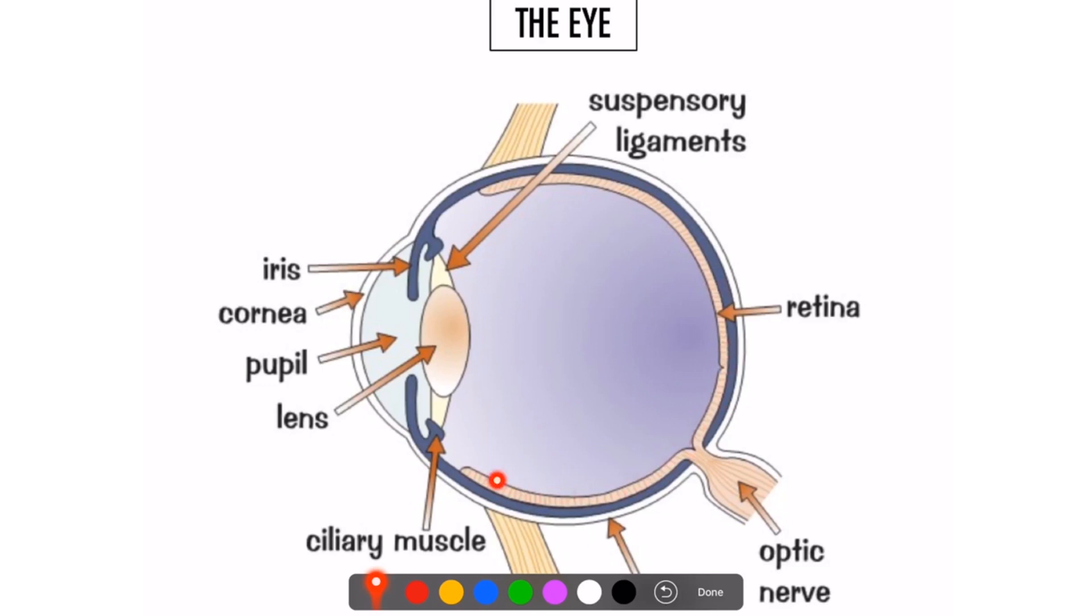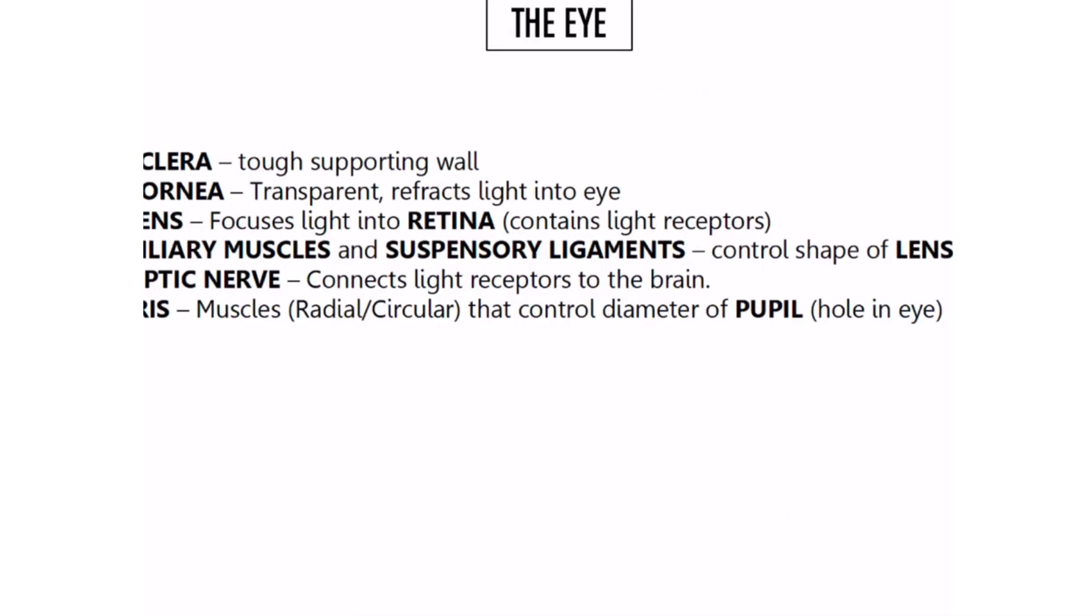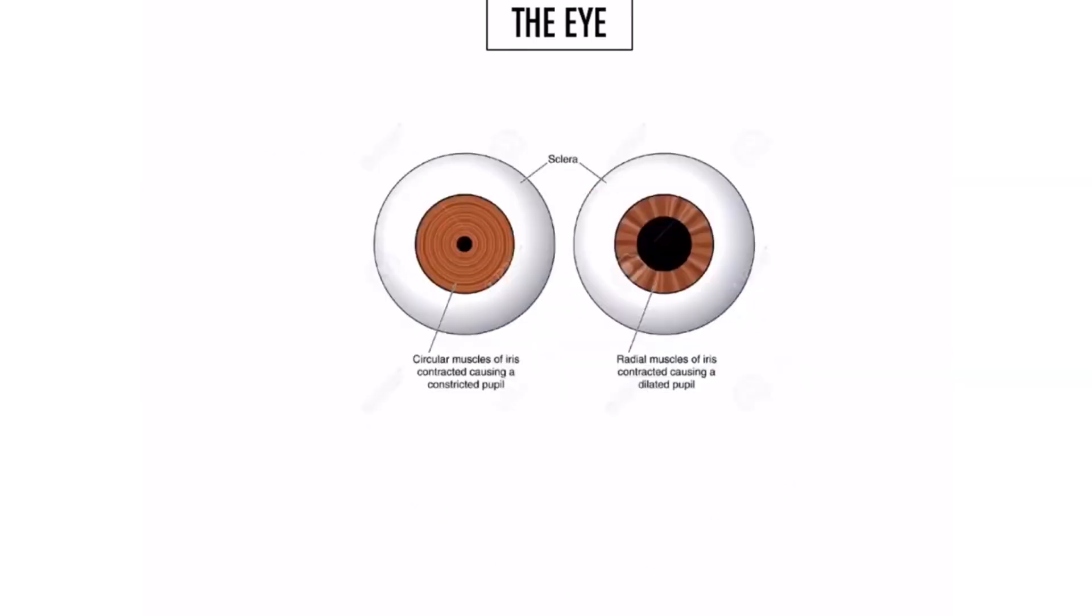Also the iris, which is the colorful part of the eye, these are muscles so they will act as effectors. If you look at the colorful part of the eye, this is known as the iris. So the iris is an effector because it's a muscle—it will contract or relax.